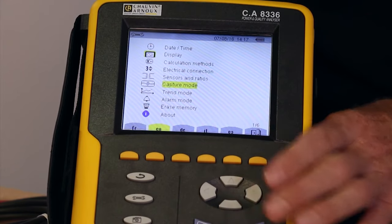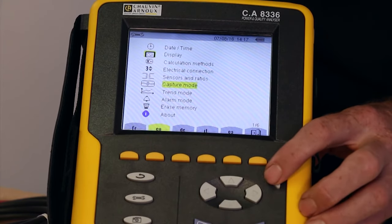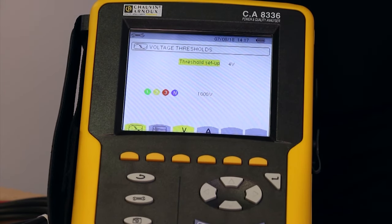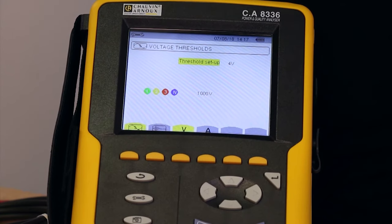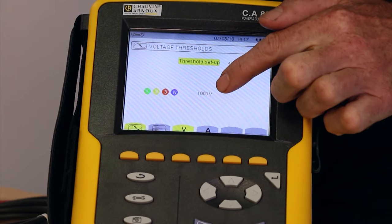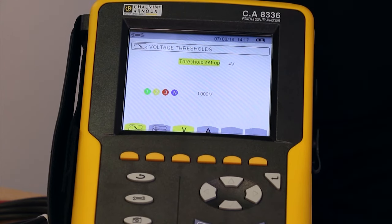The next key position down allows us to set a threshold for transients. This is called capture mode. In other words, when recordings will be triggered by an overvoltage, the level of which is decided by the user. I can select any level I want. So here I'm selecting to see only transients that are above 1000V.